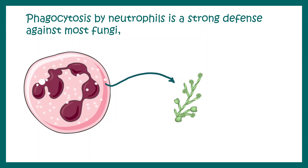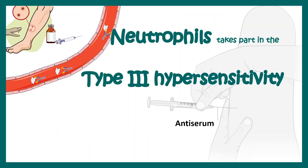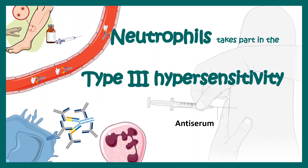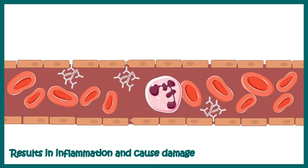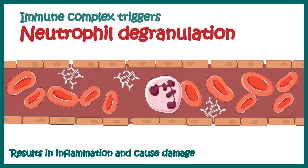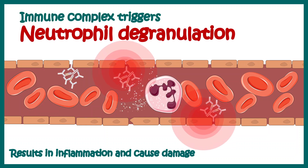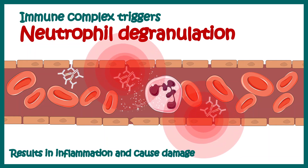Phagocytosis by neutrophils is also a strong defense mechanism against fungal infections, not just bacterial ones. Neutrophils also take part in type 3 hypersensitivity reaction, which is an immune complex-mediated hypersensitivity reaction. In that case, immune complexes circulate in blood vessels and settle down in various locations, triggering neutrophils to degranulate and creating local inflammation — resulting in the harmful effects of type 3 hypersensitivity.